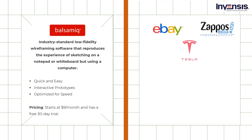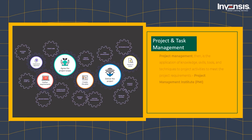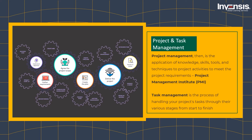Balsamic is often referred to as the undisputed leader in the UI wireframing market, with customers including Cisco, Skype, Tesla, eBay, and others. Let's say the list of items on your product backlog is growing — what would you do? If you want to keep it down, you need a good tool that both visually and in terms of data shows you exactly what you need to do to get back on track. This is where your project and task management tools come into the picture.